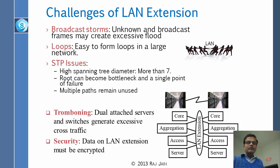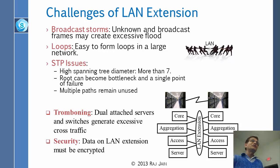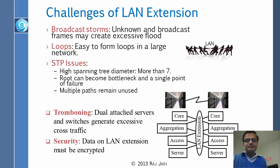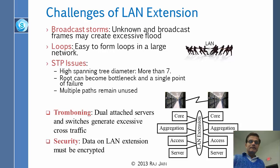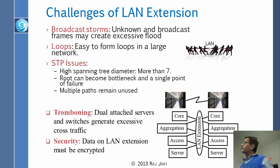Actually, what I defined is more like a radius rather than the diameter — diameter should be leaf to leaf going through the root. But the understanding here is that 7 is the depth of the tree. Then we define tromboning. Tromboning was in a set of slides we had skipped before, but let me redefine it. Basically, what happens is that if you have data centers that are very far apart, your default gateway might be in one data center while you are in the other.